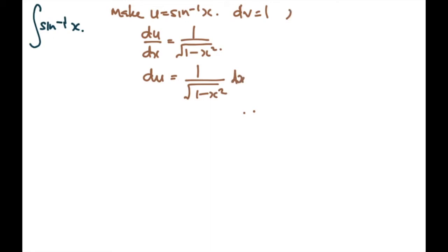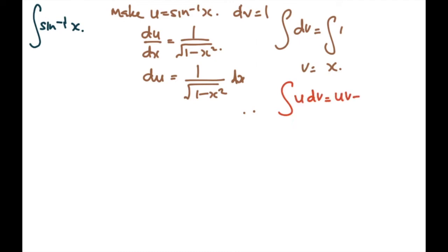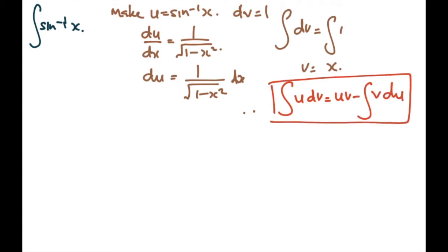Now, integrating dv — same as integrating 1 — gives v equals x. So I think we have all of it. Now just substituting into the formula. We know the formula is ∫u dv = uv − ∫v du. Remember, the first part of the equation is basically the question; what we have to find is uv minus the integration of v du. Once you have simplified that, you can solve the problem.